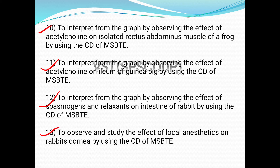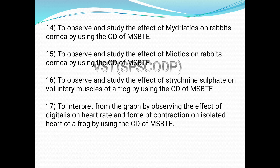The thirteenth experiment is to observe and study the effect of local anesthetics on the rabbit cornea using the CD of MSBT. You also have to know concepts such as mydriatics, light reflex, and cycloplegia, and understand the process of mydriatics and interpretation of results from observation using the CD of MSBT.